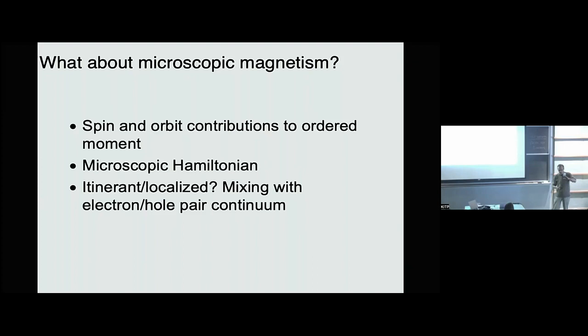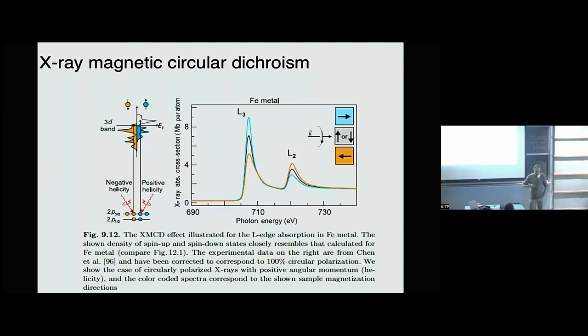This brings us to the technique. I'm going to talk a little about x-ray magnetic circular dichroism, XMCD. Like any other optical dichroism, you try to look at an optical response function where you vary the helicity of the incoming photons. What's particularly useful with x-rays is you can get to core levels — in the transition metals, you can get to the 2p core levels, which due to spin-orbit coupling are split into the 2p-1/2 state and the 2p-3/2 state.